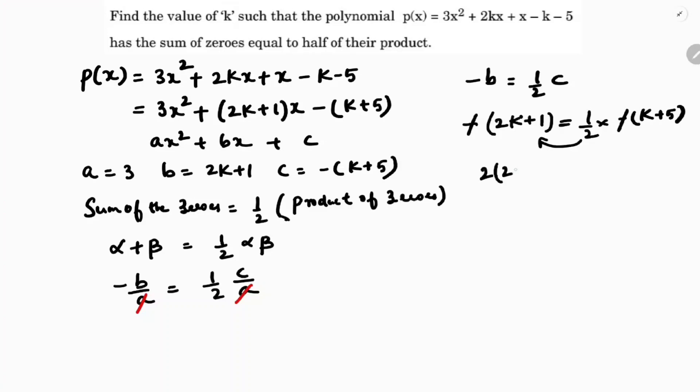2(2k+1) = k+5. Expanding: 4k+2 = k+5. Rearranging: 4k - k = 5 - 2, so 3k = 3.